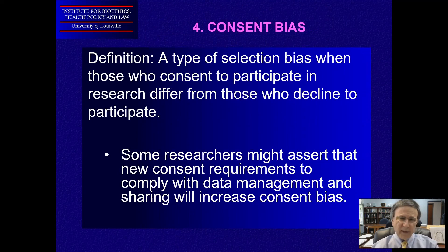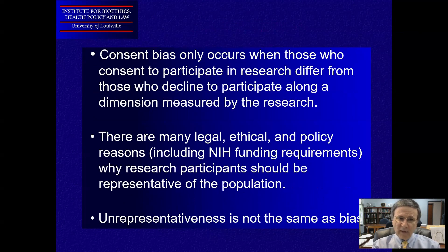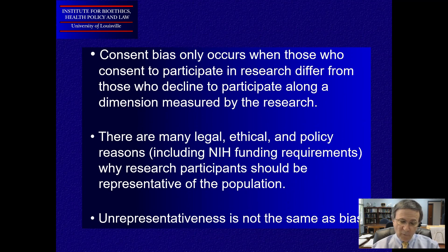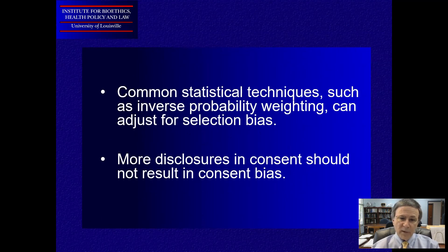Number four: if we're going to increase the amount of information in consents, is this going to lead to consent bias? Some researchers might assert that, but I don't think it's true. I think consent bias only occurs when those who participate and those who don't participate are differentiated along a dimension that's measured by the research. There are many reasons, including NIH funding requirements, why research needs to be representative of the population. But unrepresentativeness is not the same as bias, and even if there is bias, common statistical methods such as inverse probability weighting can be used to account for that.